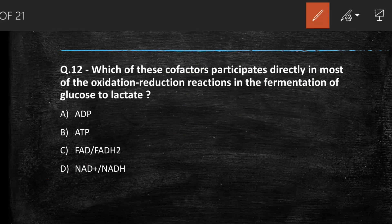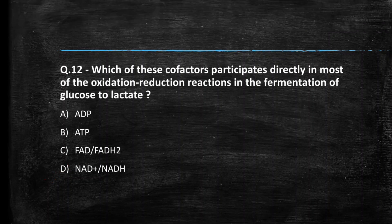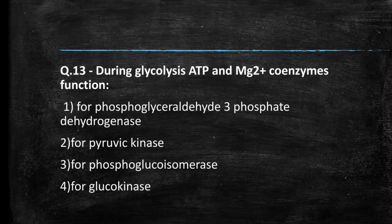Next question: which cofactor participates directly in most of the oxidation-reduction reactions in the fermentation of glucose to lactate? (A) ADP, (B) ATP, (C) FAD/FADH₂, (D) NAD⁺/NADH. The right answer is option D, NAD⁺/NADH — this is the cofactor directly involved in many oxidation-reduction reactions in the fermentation of glucose to lactate.